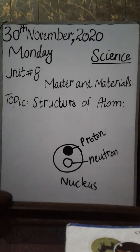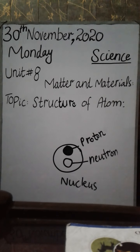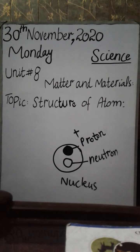So what we have learnt is that in the atom, the central part is called the nucleus. Inside the nucleus there are two further parts: proton and neutron. Proton has a positive charge, and neutron is neutral — it has no charge.